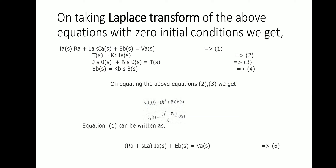Taking the Laplace transform of the above equations, we get: Ia(S)·Ra + La·S·Ia(S) + Eb(S) = Va(S). The torque equation in Laplace domain is T(S) = KT × Ia(S).